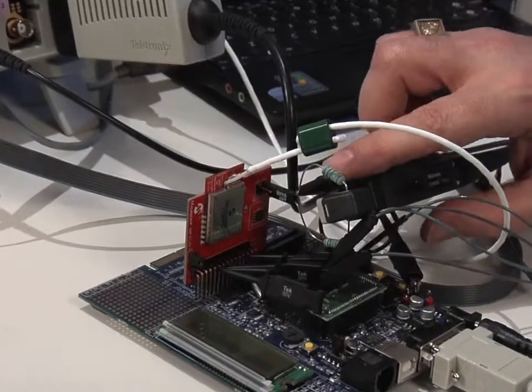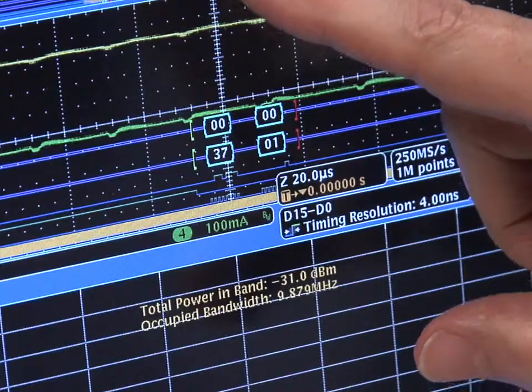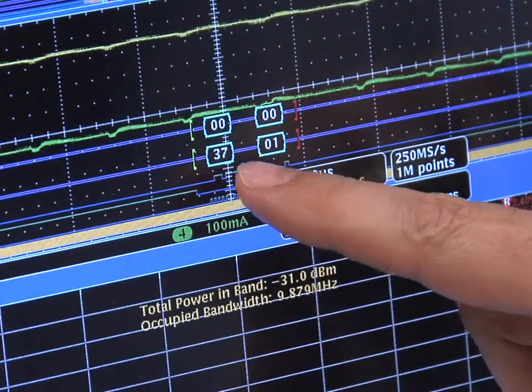First we're going to look for regulatory compliance of the RF output. Then we're going to look at the performance with a correct and with an impaired DC power supply. Then we're going to look at the digital command that initiates the packet to be sure that it is correct.